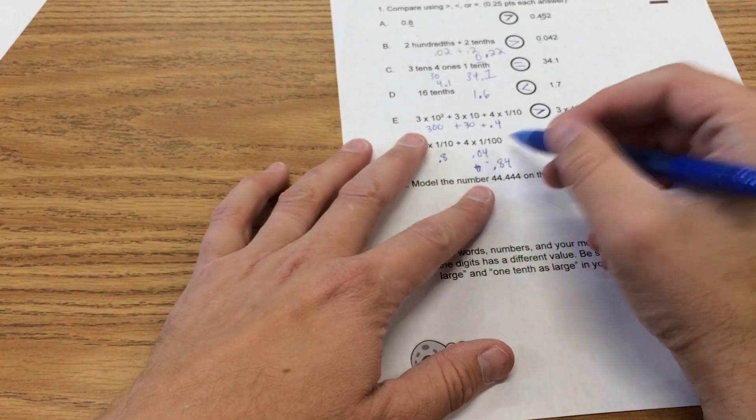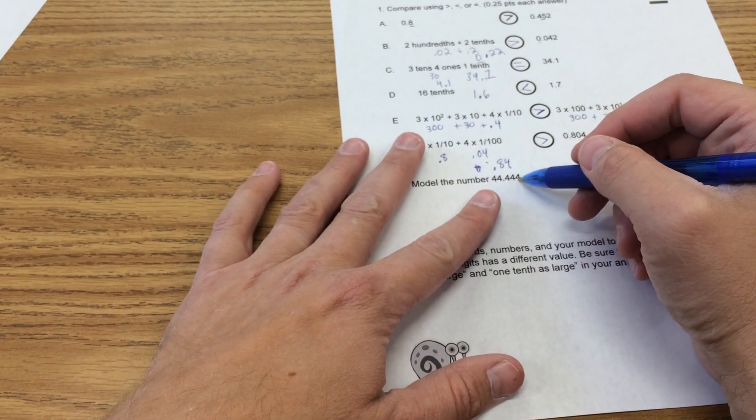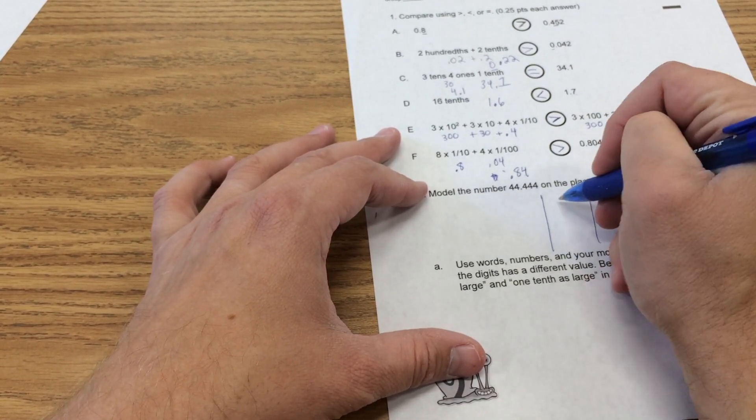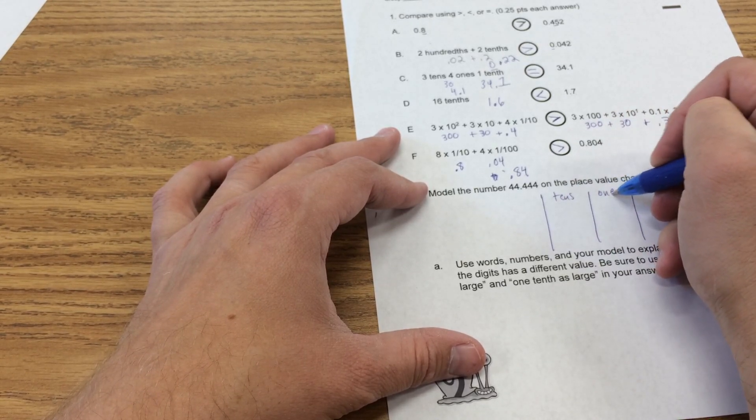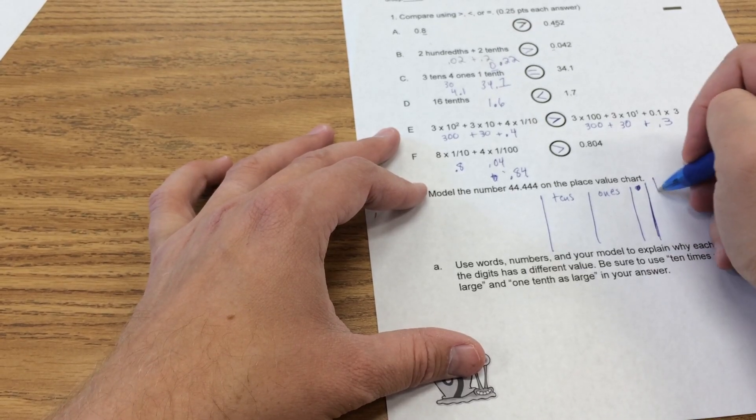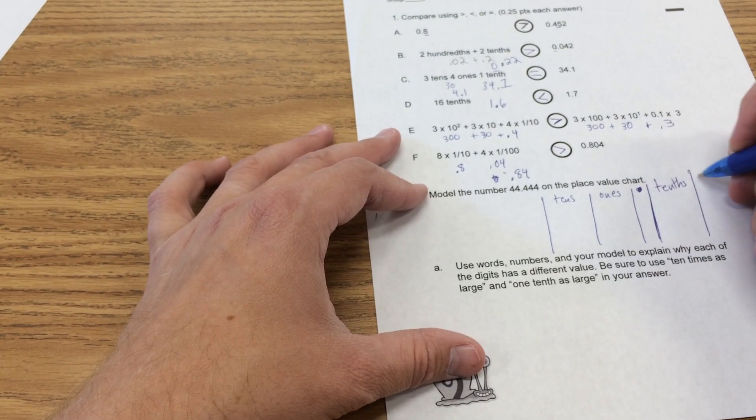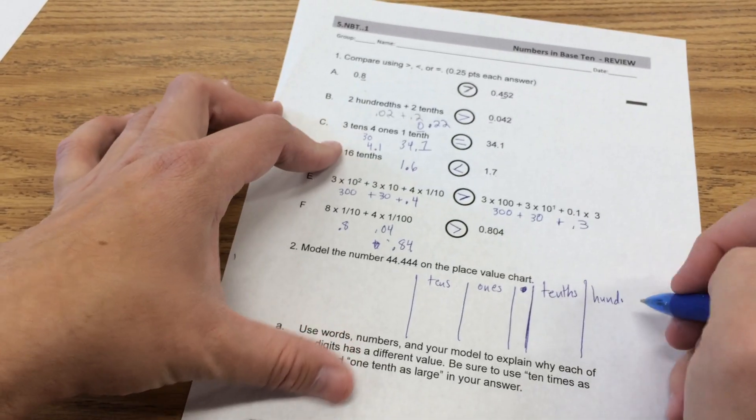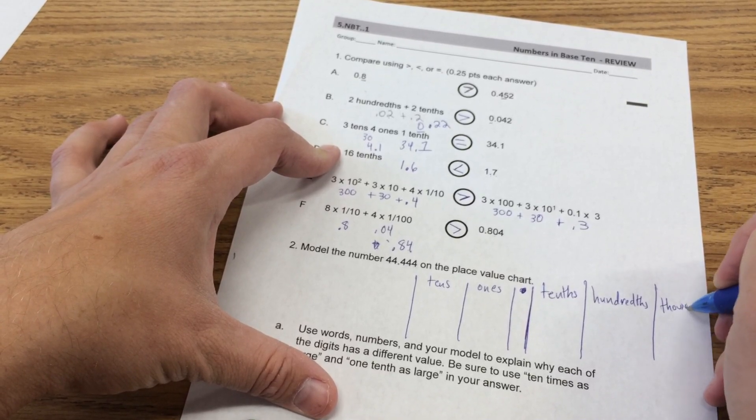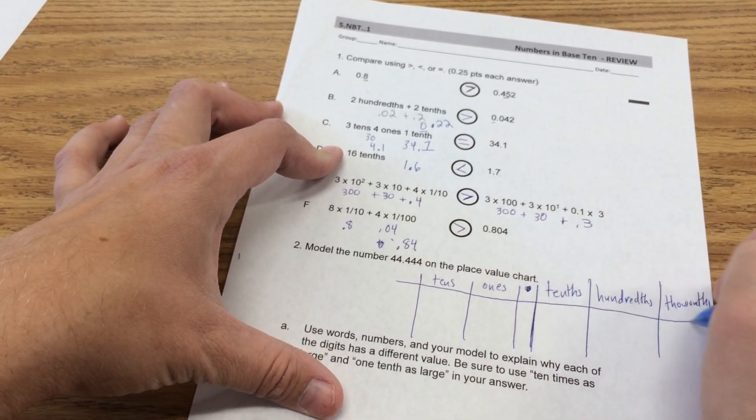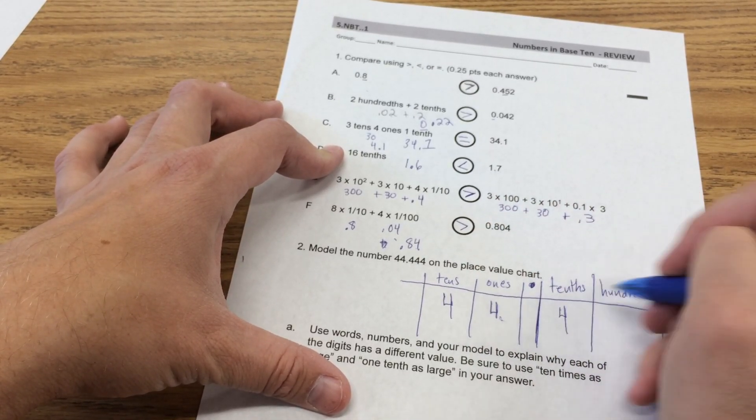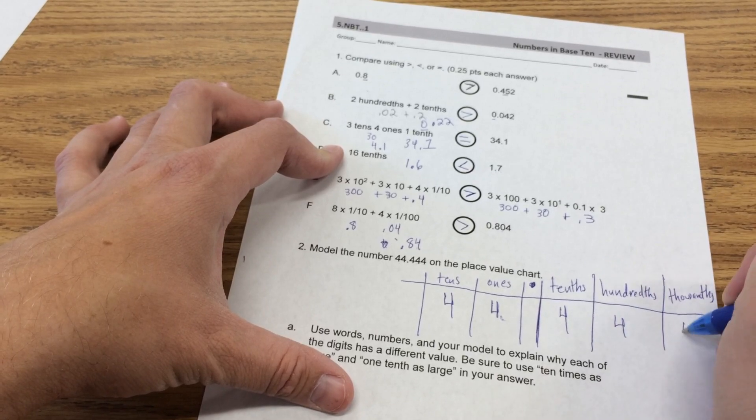It says model the number 44 and 444 thousandths on the place value chart. So let's see. Let's put tens, ones. Let's put that decimal. Then we have tenths, hundredths, thousandths. 4 tens, 4 ones, 4 tenths, 4 hundredths, 4 thousandths.